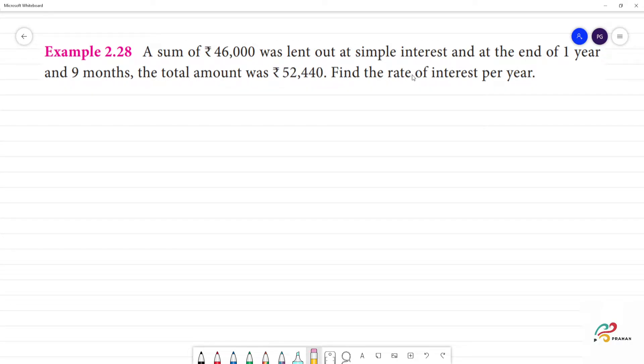A sum was lent out at simple interest and at the end of one year and nine months, the total amount was ₹52,440. The principal amount would be ₹46,000.